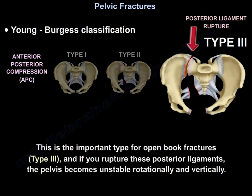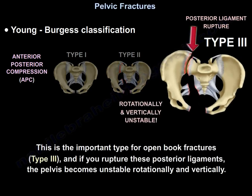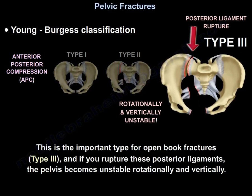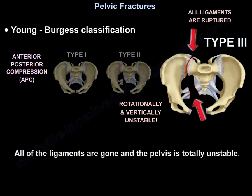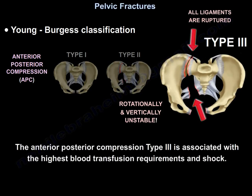Type 3 is the important type for open book fracture. If you rupture these posterior ligaments, the pelvis becomes unstable both rotationally and vertically - in fact, all the ligaments are gone and the pelvis is totally unstable. Anteroposterior compression type 3 is associated with the highest blood transfusion requirements and shock.